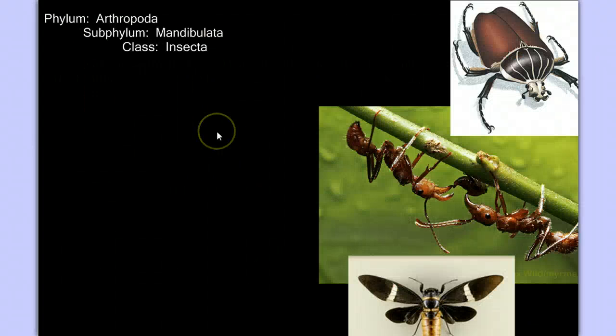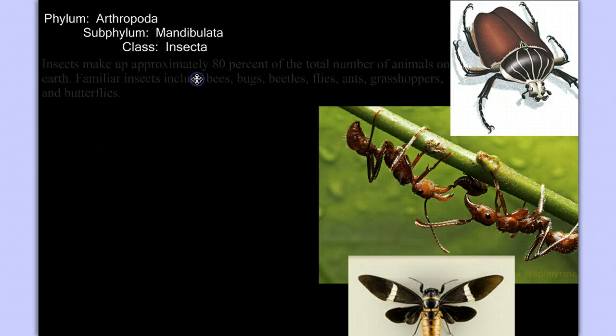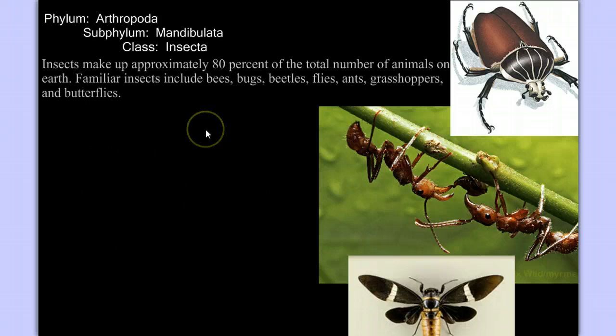Now let's move on to class insecta. Insects are the largest class in the animal kingdom, making up approximately 80% of the total number of animals on the planet. They include things like bees, beetles, flies, ants, grasshoppers, and butterflies.